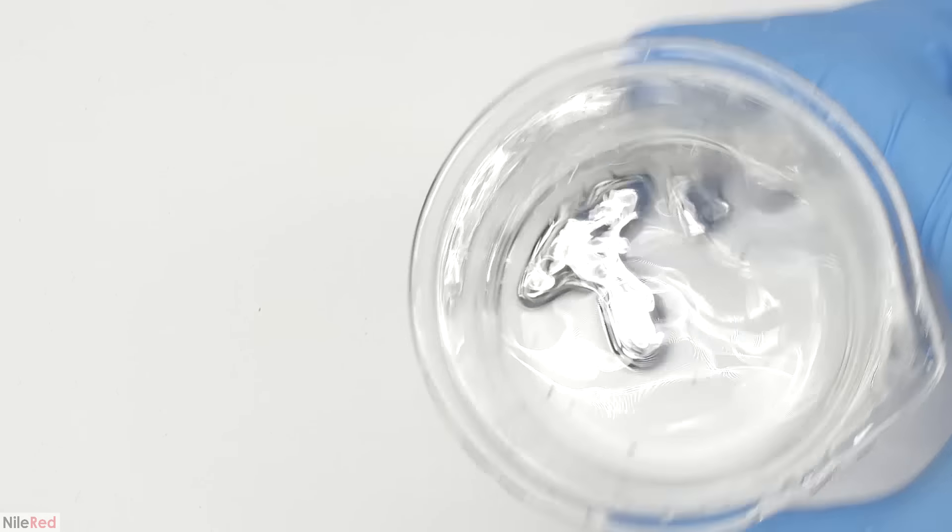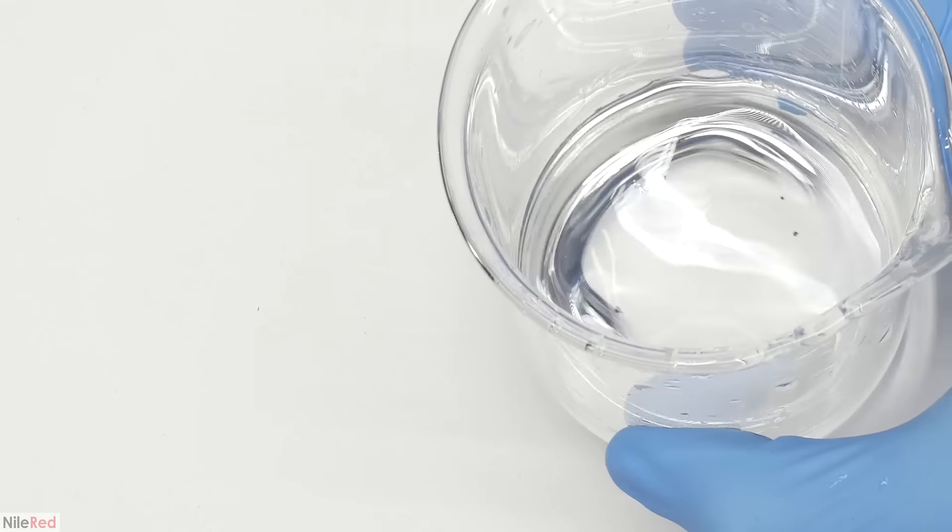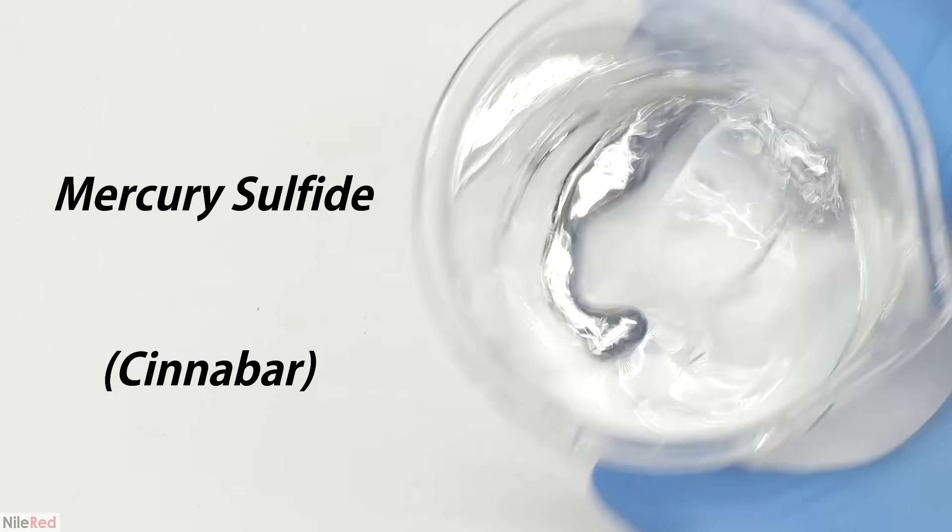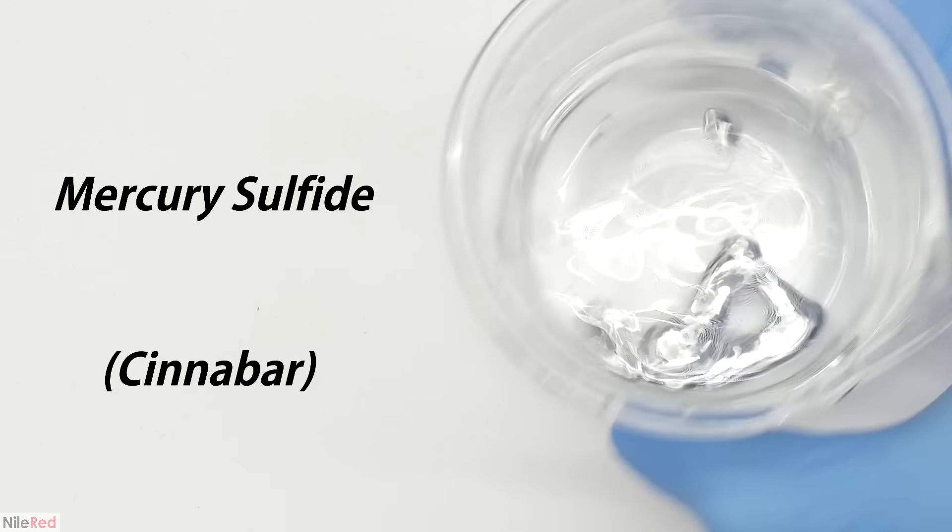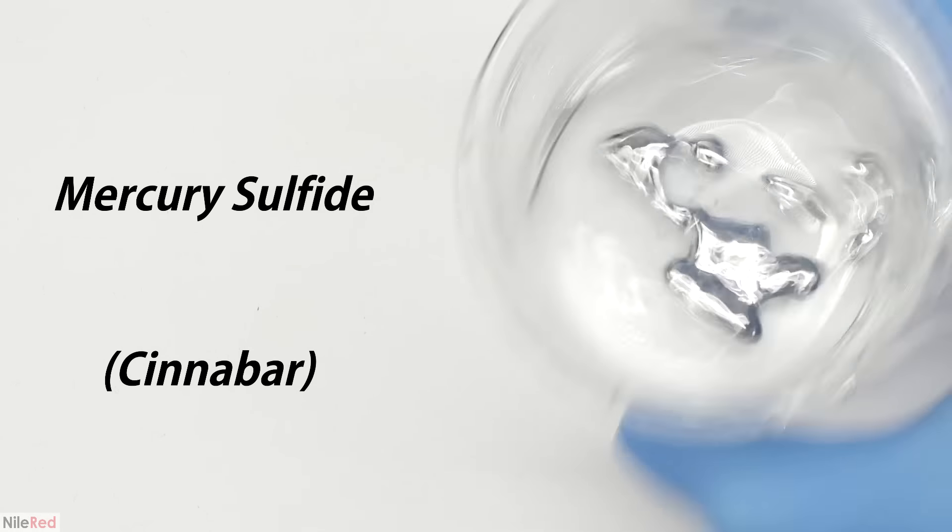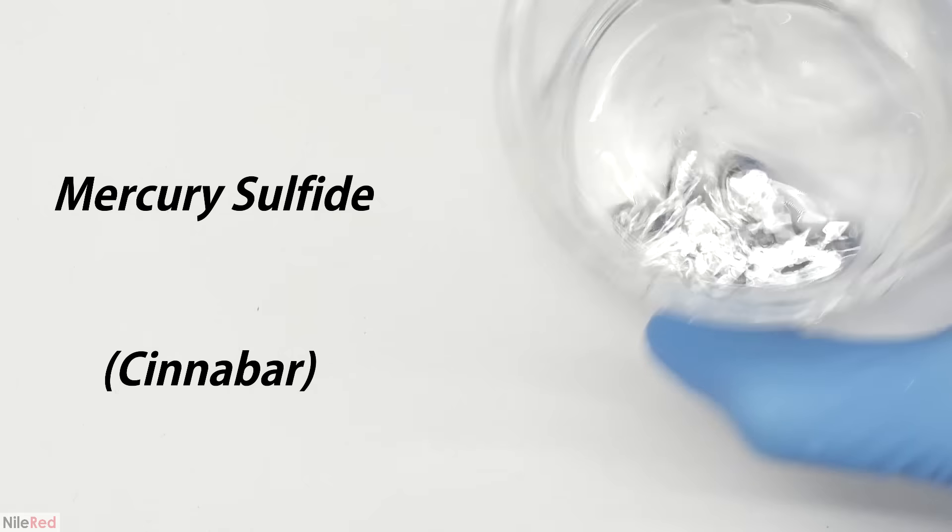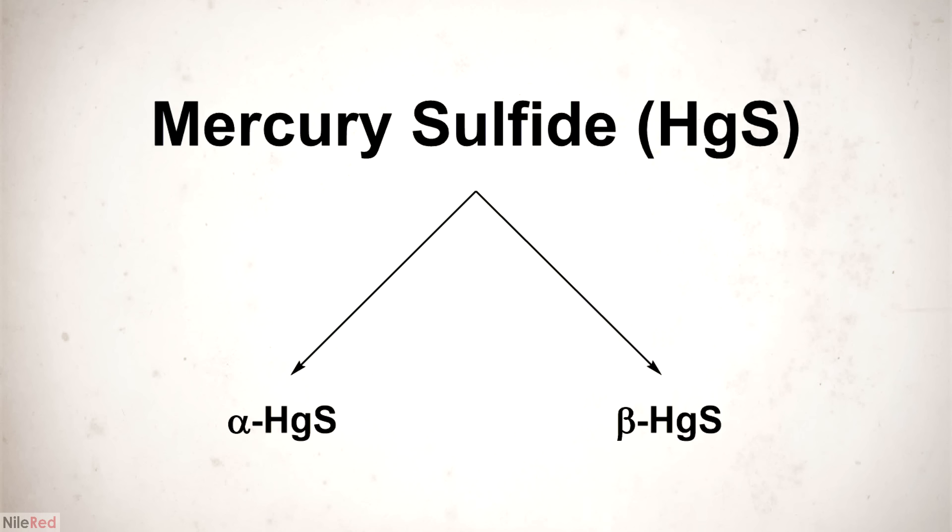Mercury is an interesting metal and element, but it rarely occurs naturally. The most commonly found form in nature is mercury sulfide, which is also known as cinnabar. Depending on how it crystallizes, mercury sulfide can exist in two major forms.